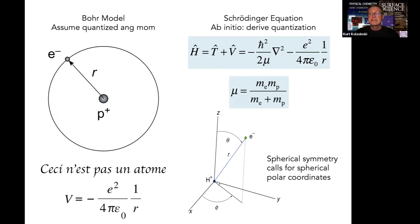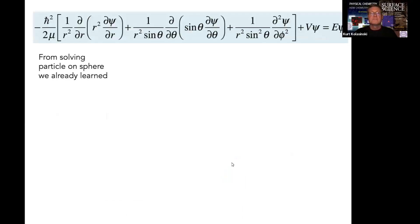The symmetry of the problem necessitates the use of spherical polar coordinates. We're going to put the hydrogen nucleus, the proton, at the center at the origin of our system. Then we're going to use r, theta, and phi to describe the coordinate system.